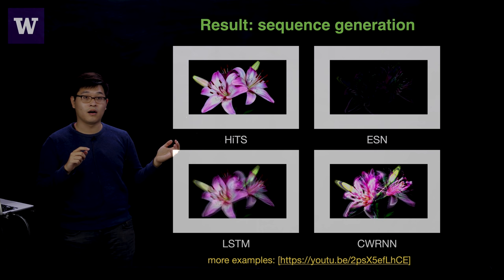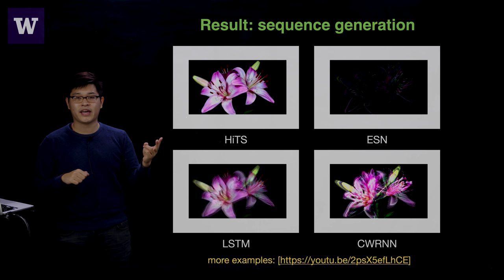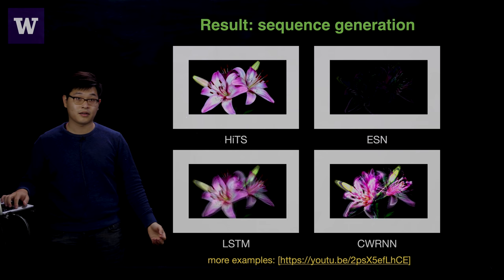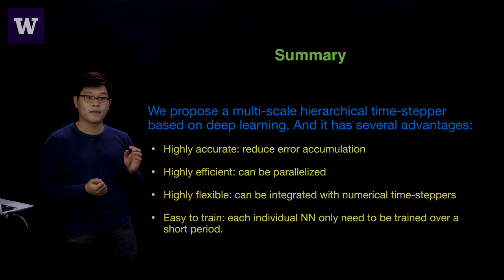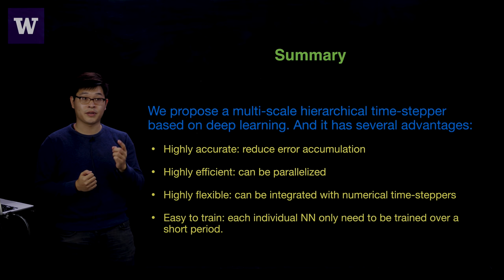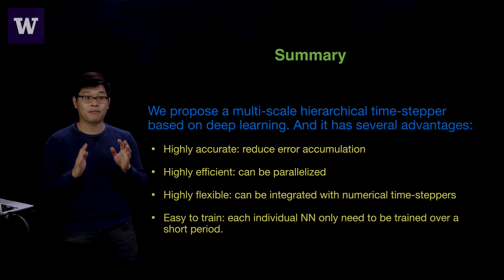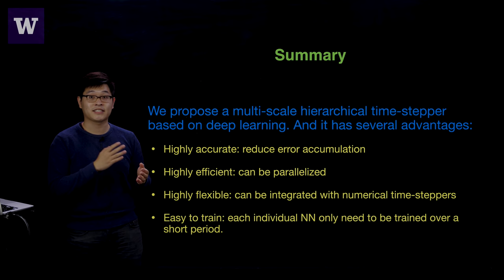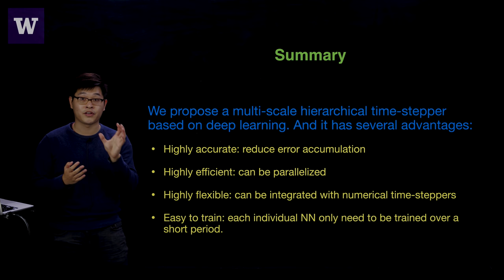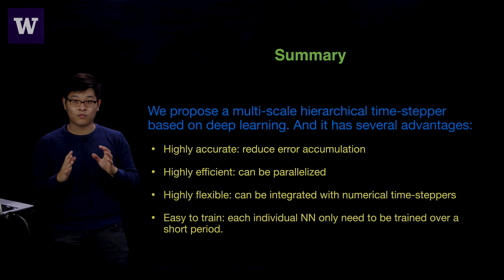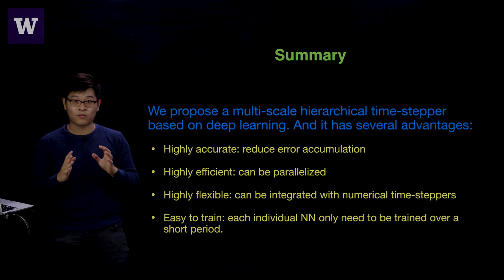There are also other examples in the paper, including fluid dynamics, chaotic systems, and audio sequences, which can be seen at the linked YouTube page. To summarize, we proposed a multi-scale hierarchical time stepper that is highly accurate (reducing error accumulation), highly efficient (parallelizable by nature), highly flexible (can be jointly used with numerical time-steppers to accelerate classical algorithms), and easy to train — each individual network only needs to focus on its own range of interest, circumventing the exploding and vanishing gradient problem. Thanks for listening.